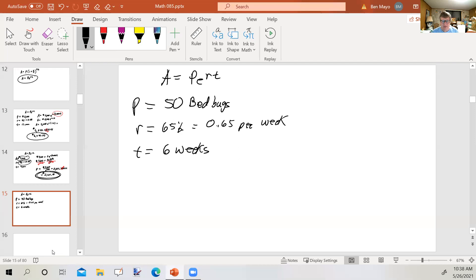So A equals 50 times e raised to the 0.65 times six. 0.65 times six is 3.9. So 50 times e to the 3.9 power. We get 2470.122455. We can only have a whole number of bedbugs, so that would be about 2,470 bedbugs. If that doesn't make you want to go crawl under the sheets, I don't know what will.